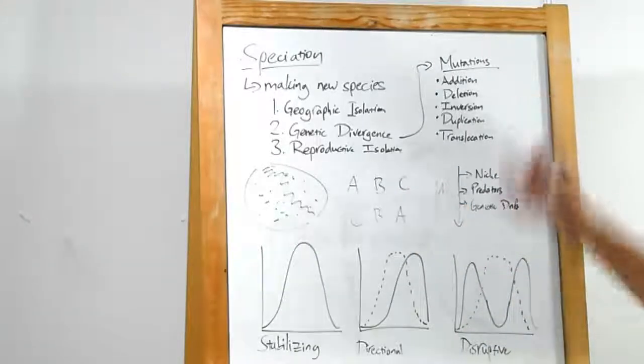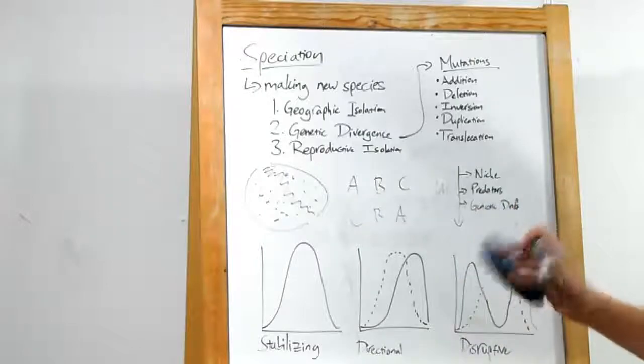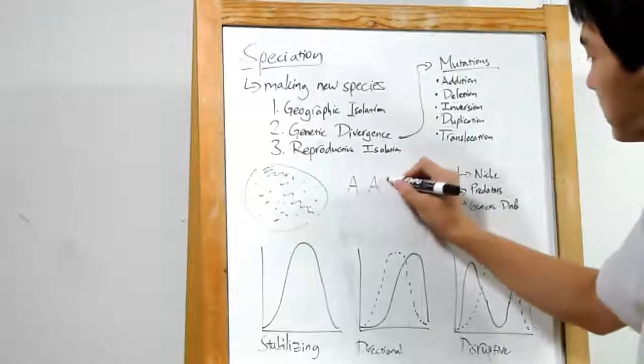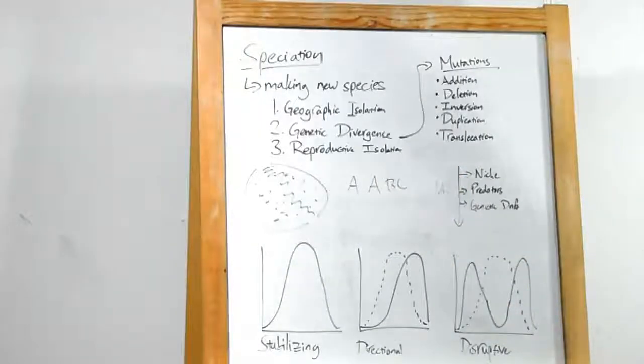The next one is duplication. That's when one of these sequences gets copied. Instead of A, B, C, perhaps A, A, B, C. We have segment copied.